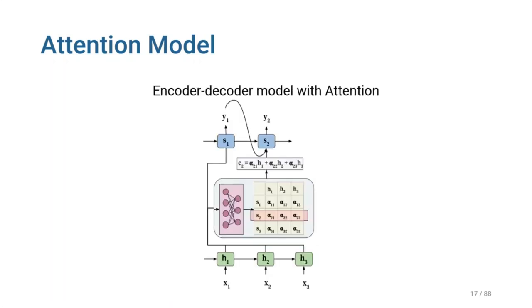Attention model attempts to overcome these problems by allowing the decoder to access the complete encoded input sequence H1, H2, and H3. The core idea is to induce the attention weights alpha over the input sequence to assign priority to the positions where the appropriate information is present, to produce the next output token.